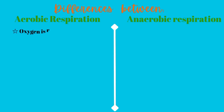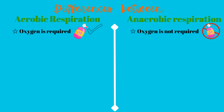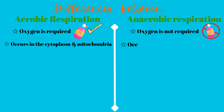Now let's discuss the differences between aerobic and anaerobic respiration. First difference: oxygen — aerobic respiration requires oxygen, while anaerobic respiration does not. Next, where do the two processes take place? Aerobic respiration occurs in both the cell cytoplasm and the mitochondria, whereas anaerobic respiration only occurs in the cell cytoplasm.